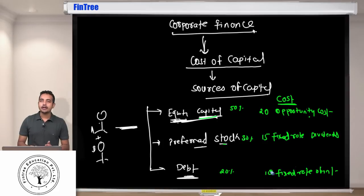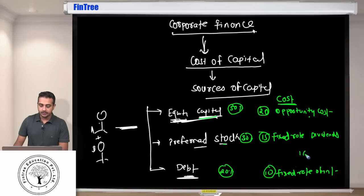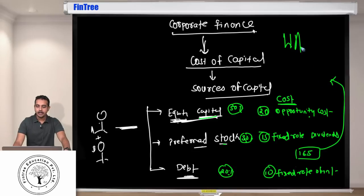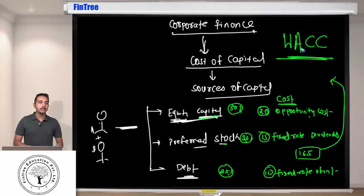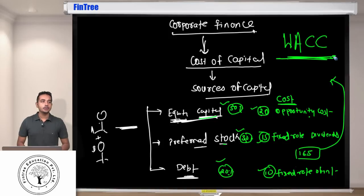So I can ask you a question. On an average what is the cost of the entire capital of the company? Are we together on this? And then what you would say is 50% is coming at 20, 30% is coming at 15, and 20% is coming at 10. So on an average the cost is coming out to be, is that correct? On an average the cost is coming out to be 16.5%. So this 16.5% in this reading which is simply a weighted average, 50% into 20 plus 30% into 15 plus 20% into 10, this would be referred to as weighted average cost of capital. And this is what we would be learning in this reading. So we would learn how to calculate this weight, this weight, this weight. How to calculate this cost, this cost, this cost and then calculate the WACC.